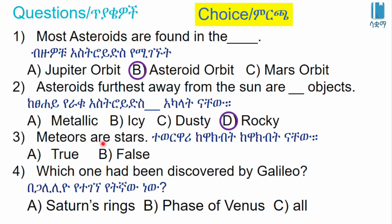Meteors are not stars. Which discoveries had been made by Galileo? A: Saturn's rings. B: Phases of Venus. C: All. The answer is all — this is Galileo.